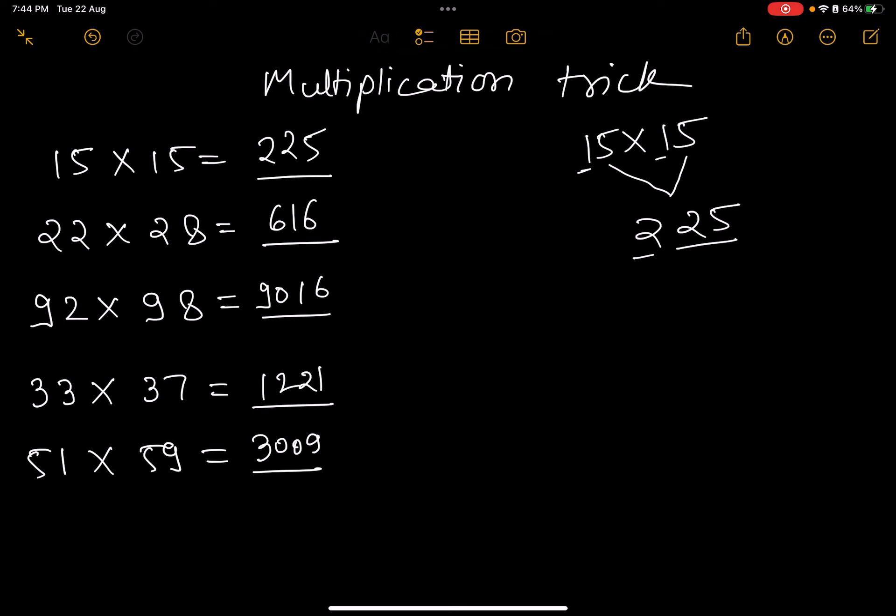Let's do a detailed example. We'll multiply 33×37. First, I multiply the last digits straightforward: 3×7 equals 21. Now for the other digits, I need to multiply 3 by the number that comes next to 3, which is 4.